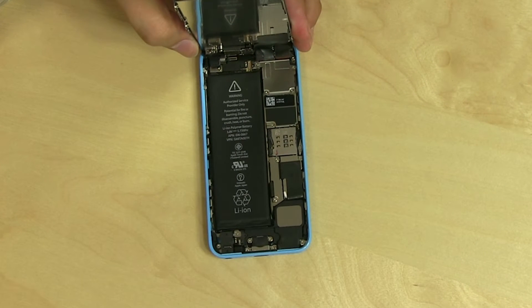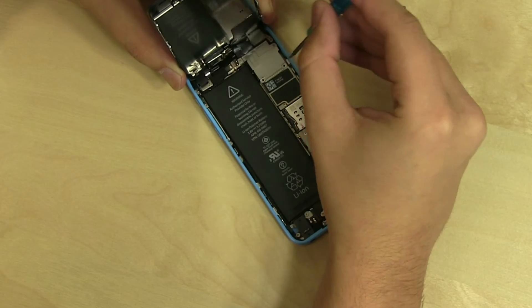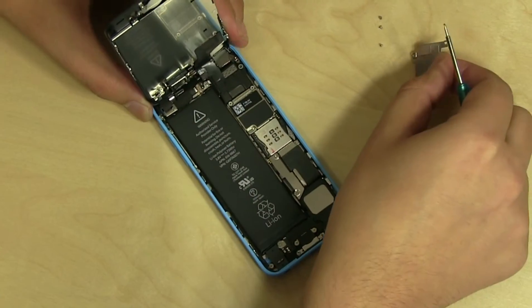Display assembly connectors are located under a metal shield, which is secured with four Phillips screws. Remove the screws while supporting the display assembly at the right angle to the logic board. Remove the metal shield.